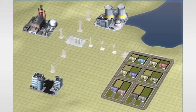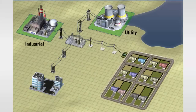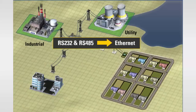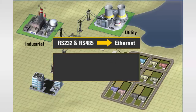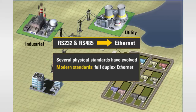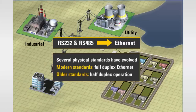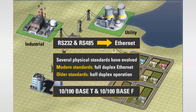Larger industrial and utility power applications have already migrated from older proprietary RS-232 and RS-485 based LAN technology to Ethernet, or are in the process of doing so. Over the years, several physical standards have evolved. The modern standards support full-duplex Ethernet, while the older standards support only half-duplex operation. By far, the two most popular physical layer standards are 10/100BASE-T and 10/100BASE-F. Both support full-duplex operation, each with its own advantages, and so it will be these two physical standards that we'll examine.